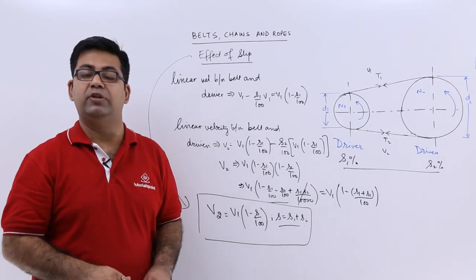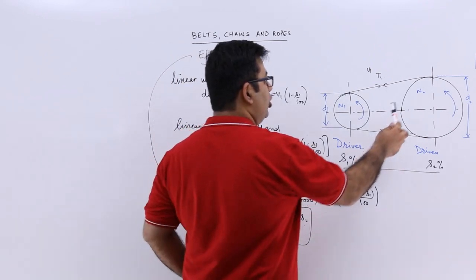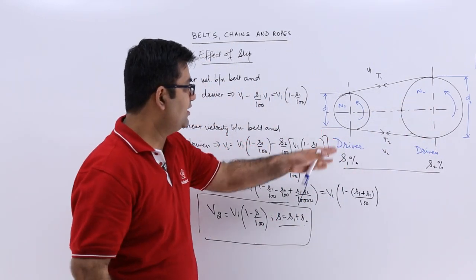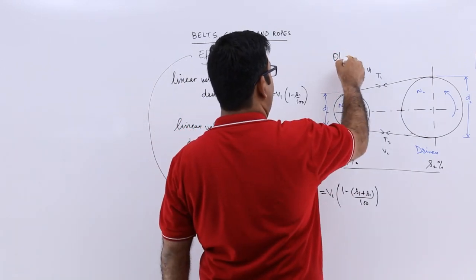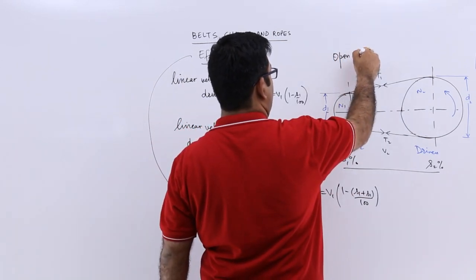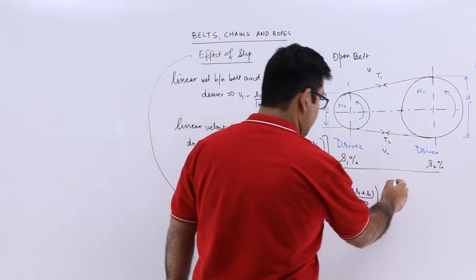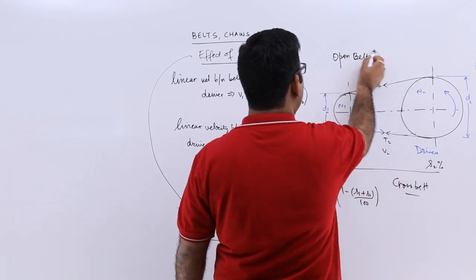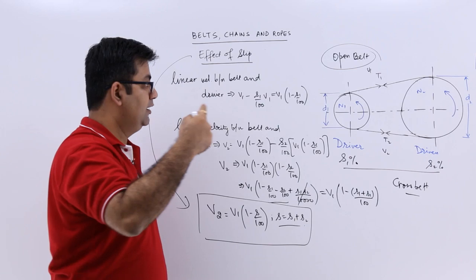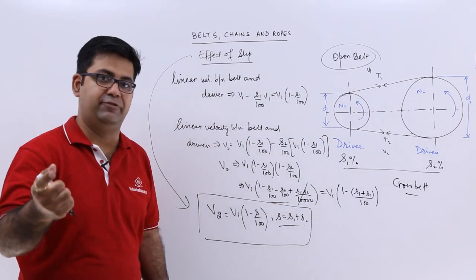Now let's move on to the next video and derive a relationship between the length of the belt which passes over this configuration of pulley. This is an open belt arrangement, and there is one more arrangement that is the cross belt. So we will talk about the open belt and the length of the belt over this pulley arrangement in the next video.